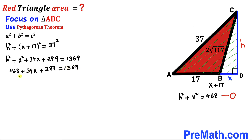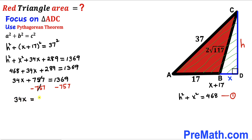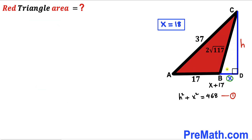Combining the like terms on the left side gives 34x + 757 = 1369. Subtracting 757 from both sides we get 34x = 612. Dividing both sides by 34 to isolate x gives us x = 18. So segment BD turns out to be 18 units.